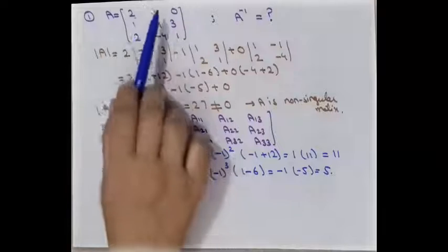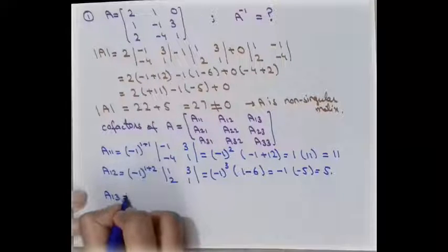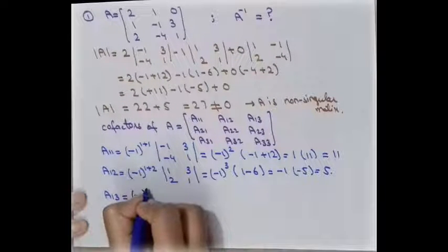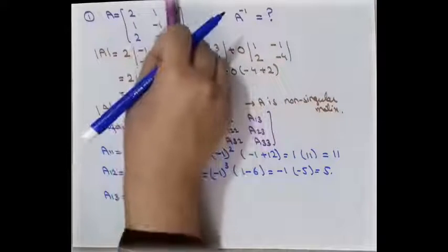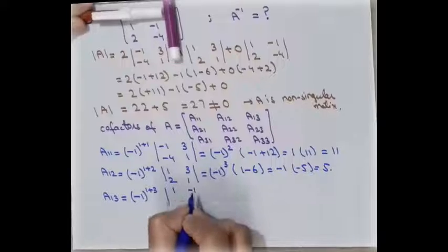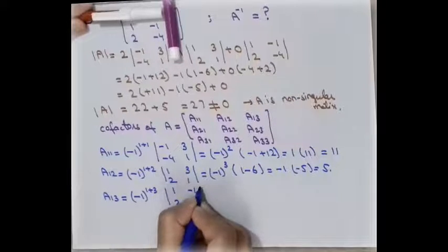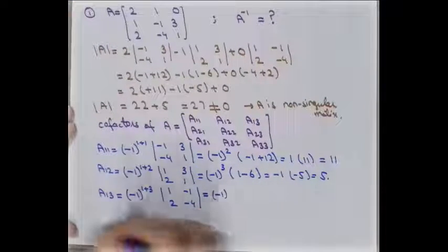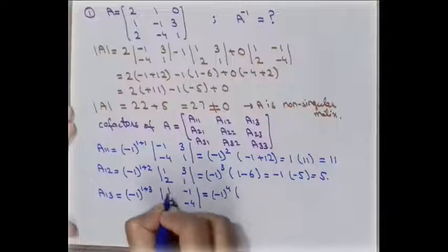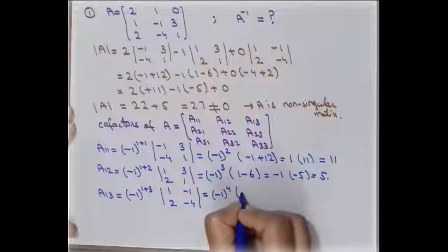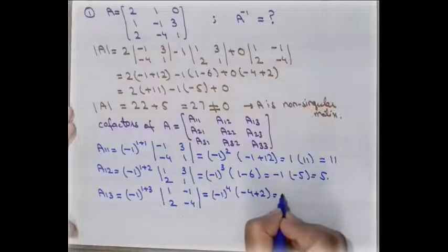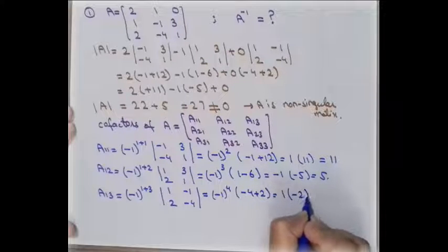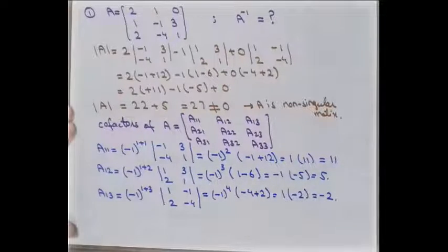To calculate A13, the co-factor of element 0, using the formula with i+j = 1+3 = 4, we remove the corresponding row and column, leaving: 1, -1, 2, -4. The determinant is -4 + 2 = -2. Since the power 4 is even, (-1)^4 = 1, so A13 = 1 × (-2) = -2.